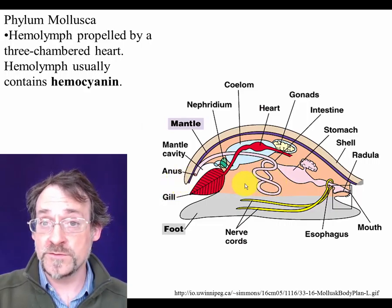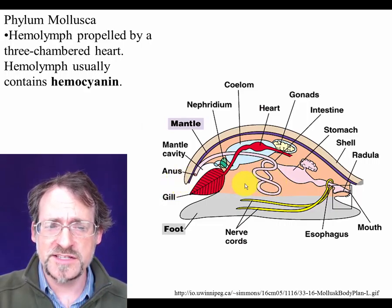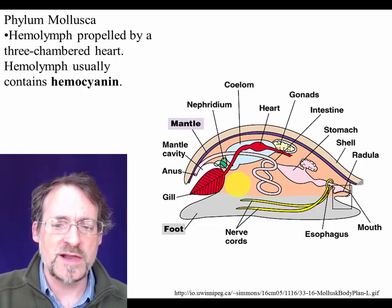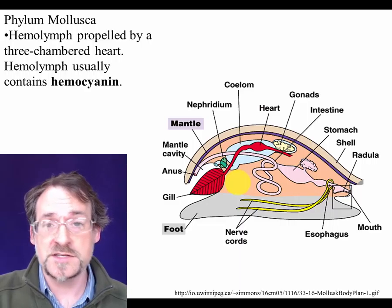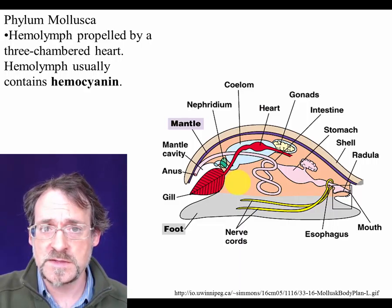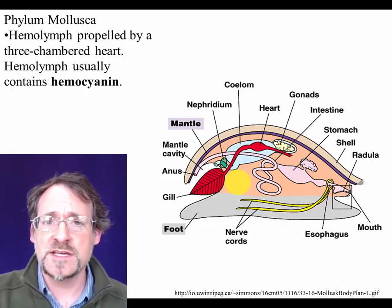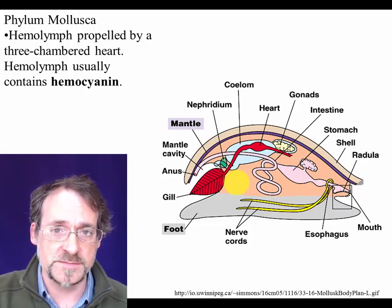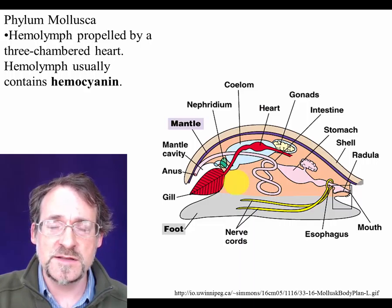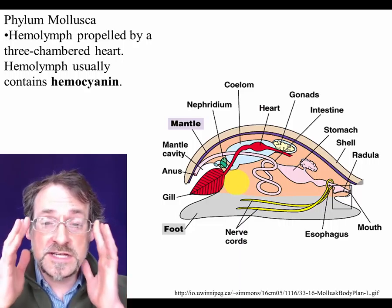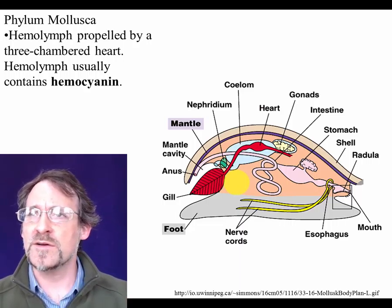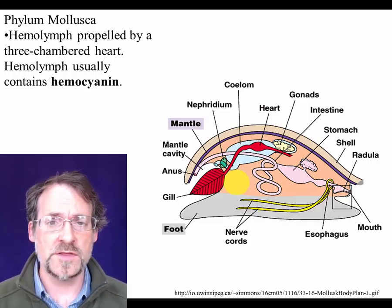The circulatory fluid in a mollusk is not called blood, it's called hemolymph. But hemolymph basically plays the same role as blood does in vertebrates. Like our blood, the hemolymph of a mollusk contains a pigment that binds oxygen. In the mollusks, this oxygen-binding pigment is called hemocyanin. Interestingly, it's also brightly colored, although it is chemically quite different from hemoglobin.